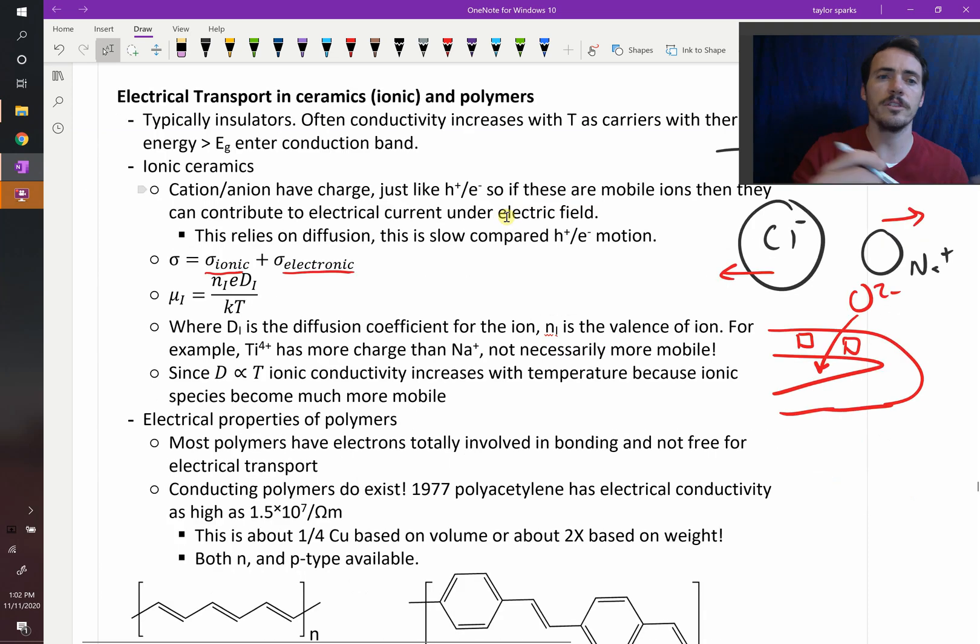Something to note here is that the mobility of ionic transport is going to be equal to the number of your ions times the charge of them, times their diffusivity divided by thermal energy. So normally with a metal we said that its mobility drops as you heat it, and we said also with semiconductors that the mobility also drops. But here you can see a rise because your mobility depends on temperature.